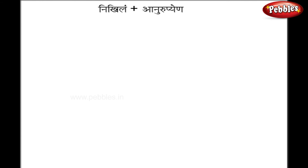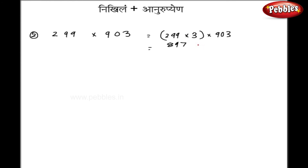We will now solve one typical example where we will manipulate both the base and one of the two numbers. Let us take 299 multiplied by 903. In this case I will manipulate the number 299 by multiplying by 3, and multiply by 903. So I get 897 multiplied by 903.